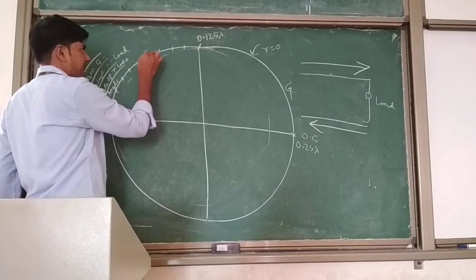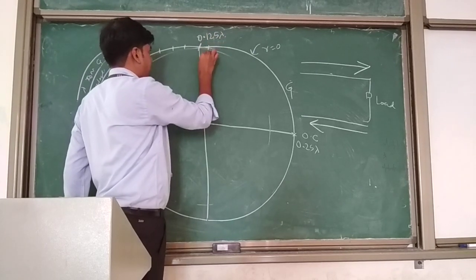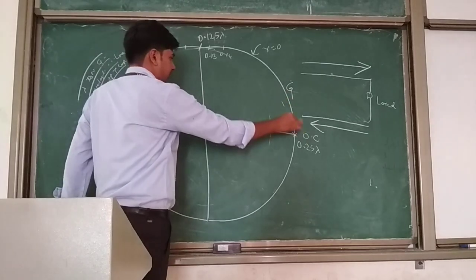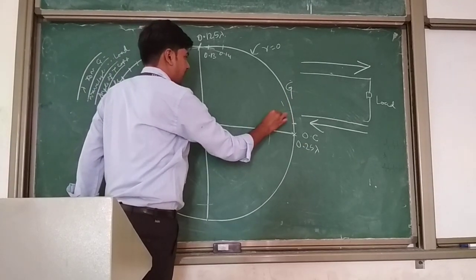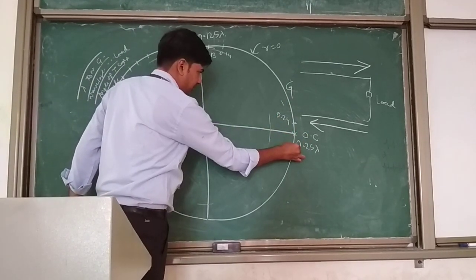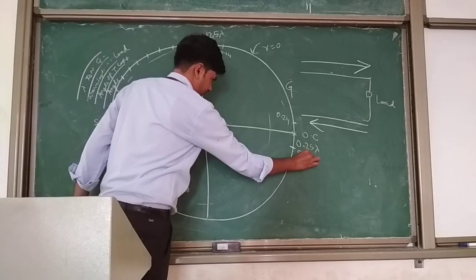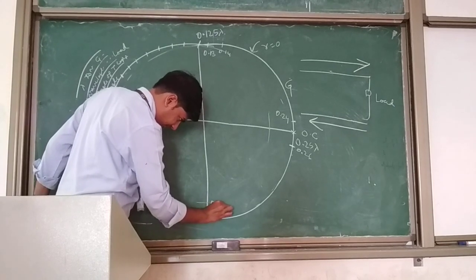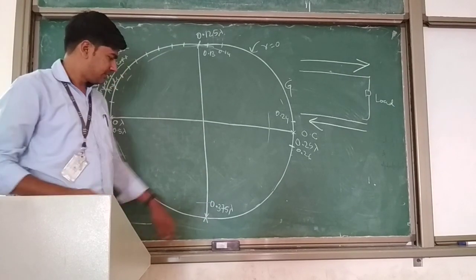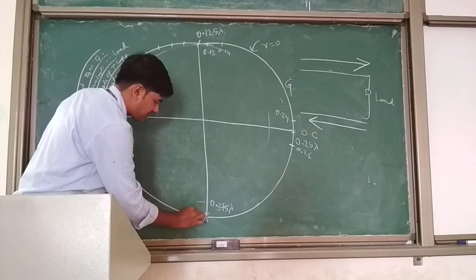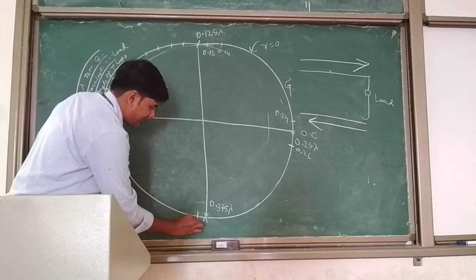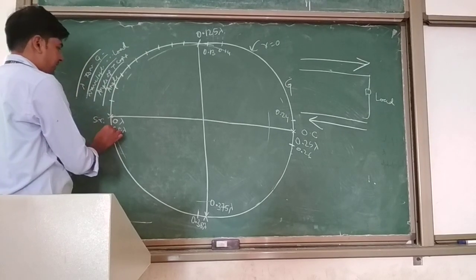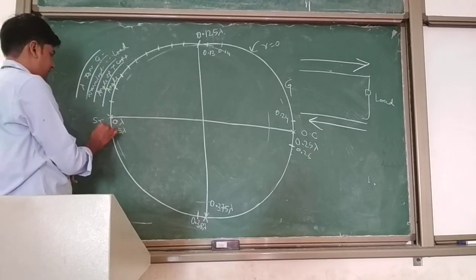The scale is represented as 0.1, 0.2, 0.3, 0.4 and so on. At 0.125, the next values are 0.13, 0.14, and so on. Then 0.24, 0.25 lambda, 0.26, continuing until this becomes 0.375 lambda. Just next to that you have 0.38 lambda, reaching up to 0.5 lambda.